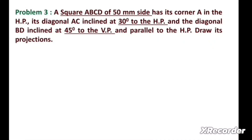Problem No. 3, Chapter Projection of Plane, Subject Engineering Graphics. The problem states that square ABCD of 50mm side has its corner A in the horizontal plane, its diagonal AC inclined at 30 degrees to the horizontal plane, and diagonal BD inclined at 45 degrees to the vertical plane and parallel to the horizontal plane. Draw its projections.